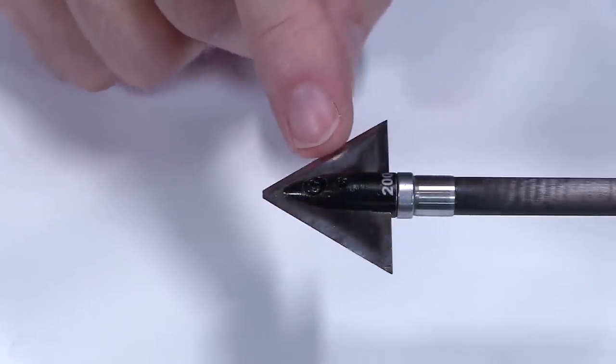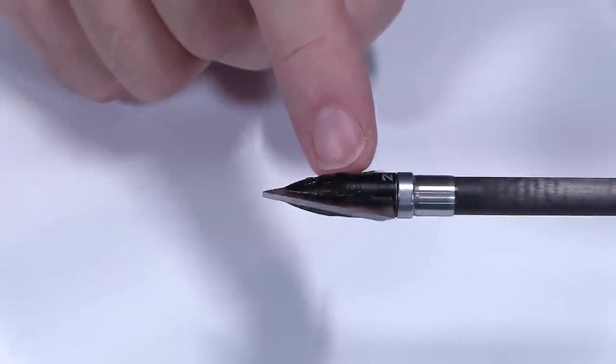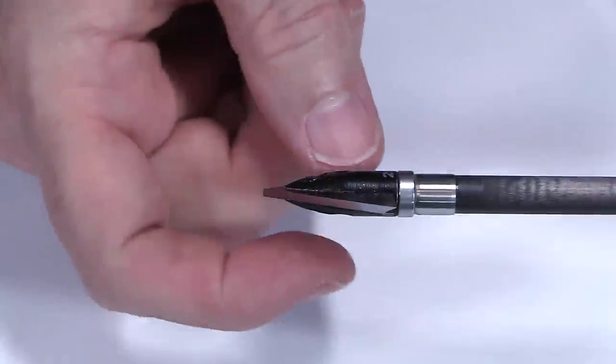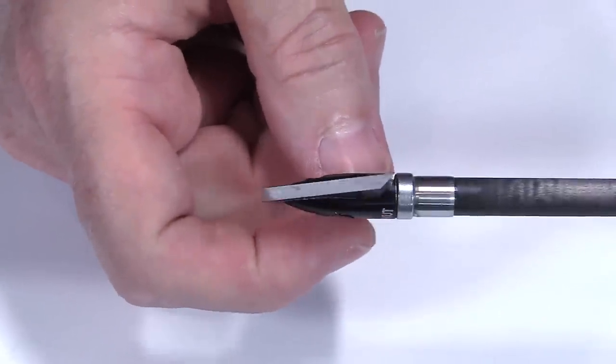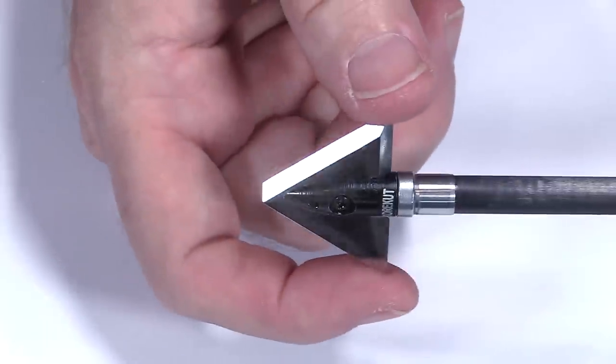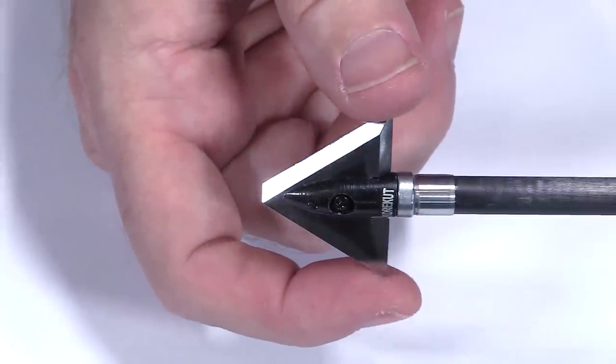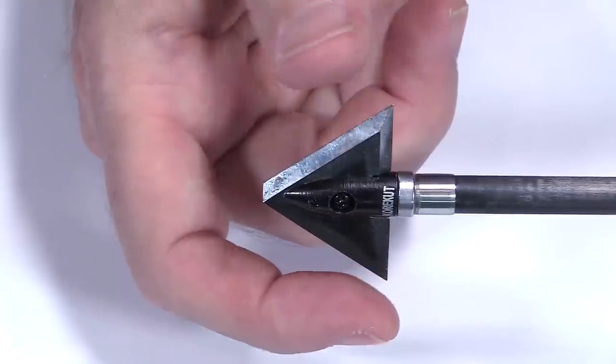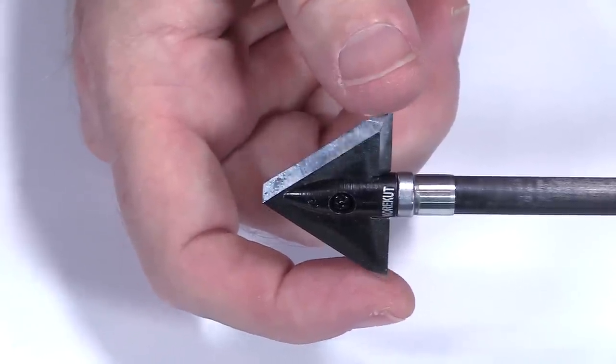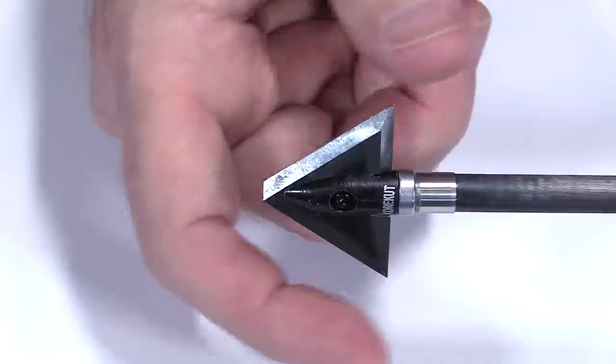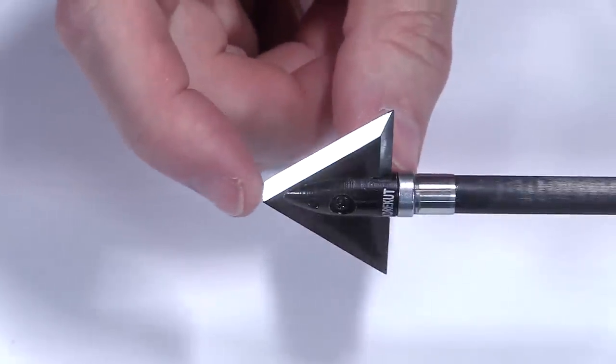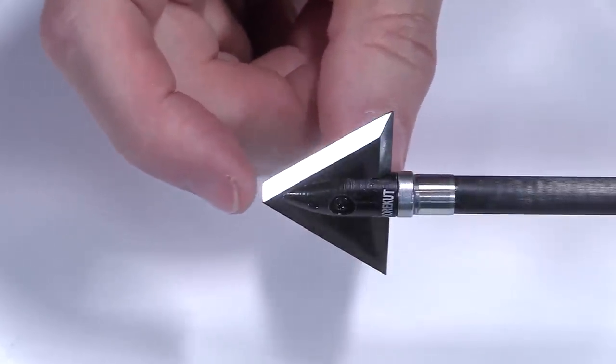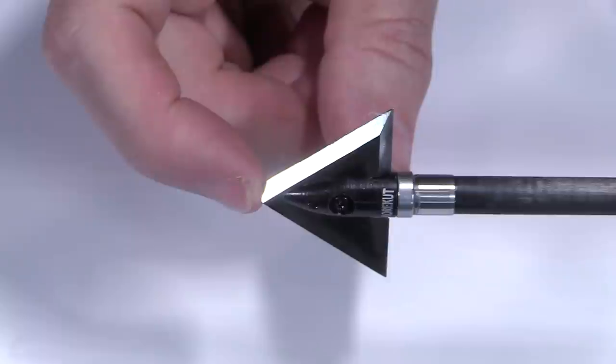On this 200 grain model, it's 0.079 inches thick. That's a nice thick blade. The cutting diameter is listed as an inch and a half. My measurement came out slightly less than that, like 1.42 inches, so just a little bit under one and a half inches, but still a nice wide cut. And the overall length is super short, sub one inch. That's really nice.